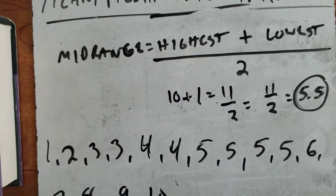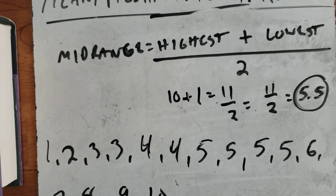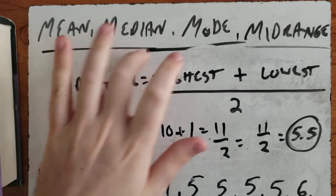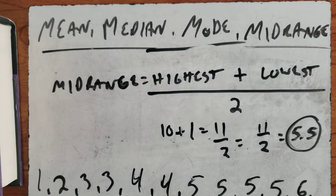Remember, mid-range is not the range. When you do your assignment, it's going to ask for mid-range, not the range, so don't get those two confused. So that's our four measures: mean, median, mode, and mid-range.